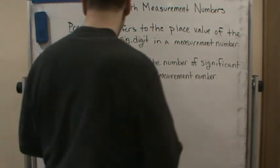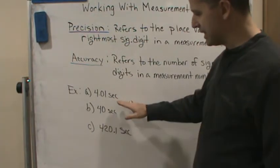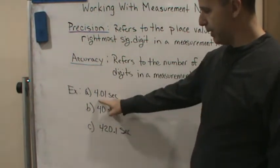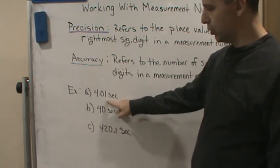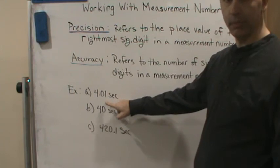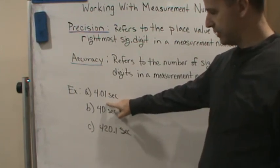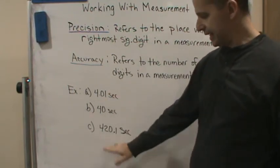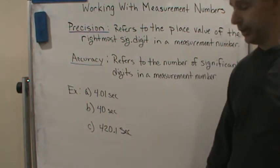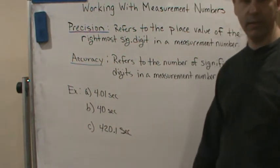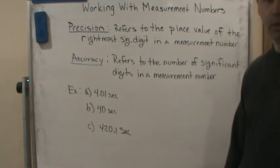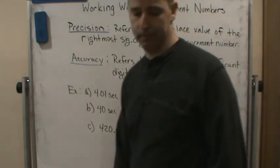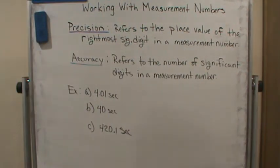Looking at all three: A is the most precise measurement because it's measured out to the most decimal places. But C is the most accurate measurement because it has the most significant digits. That's the difference between precision and accuracy — have a great day.